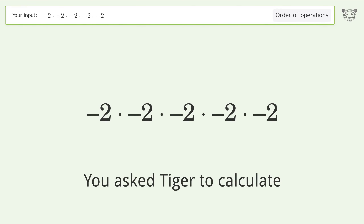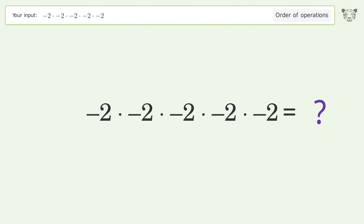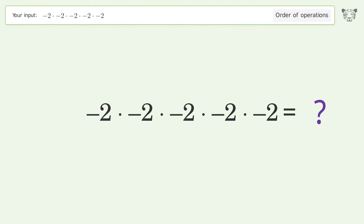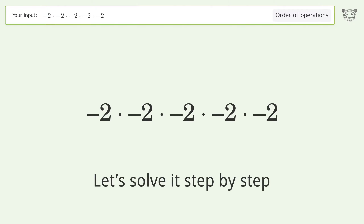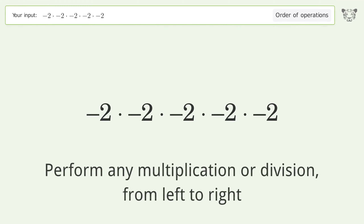You asked Tiger to calculate. This deals with the order of operations. The final result is negative 32. Let's solve it step by step — perform any multiplication or division from left to right.